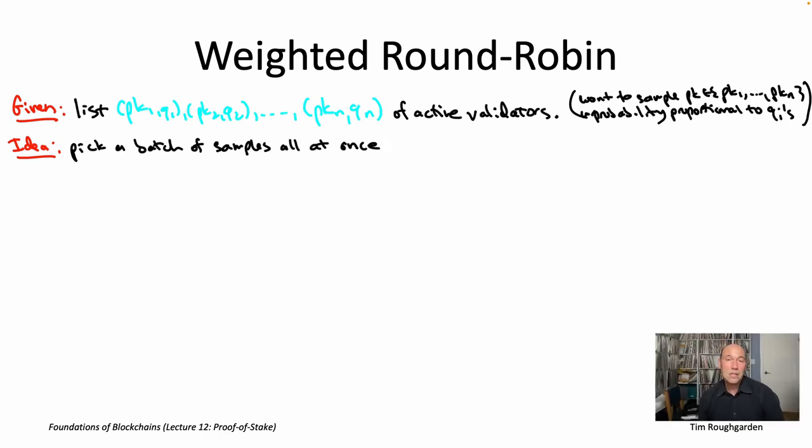Now obviously we want this sequence to reflect the stake amounts, to reflect the Q sub i's. So we're going to ask that the sequence have near proportional representation. So for example, if there's some public key that controls 1% of the overall amount of stake, then that public key should appear roughly 100 times in the list of 10,000 public keys.